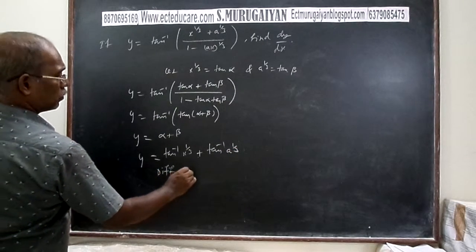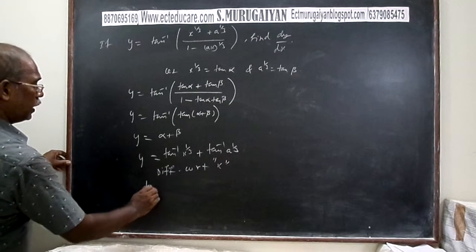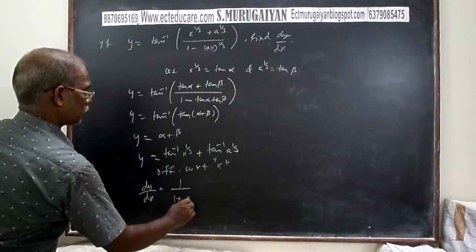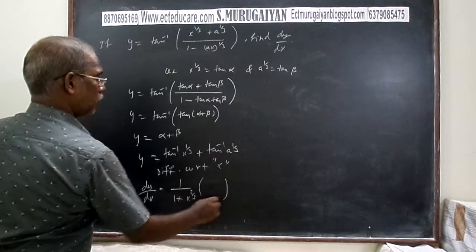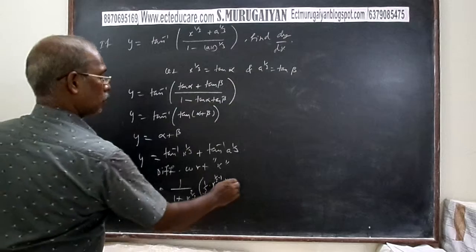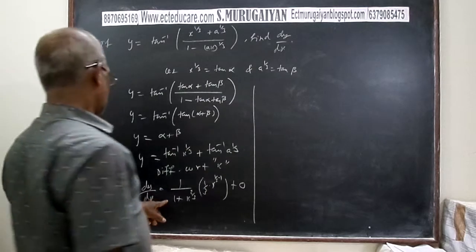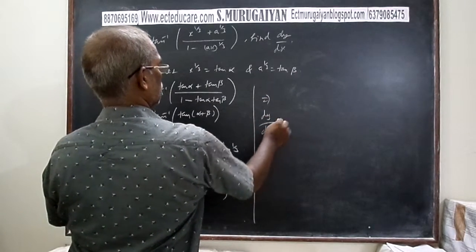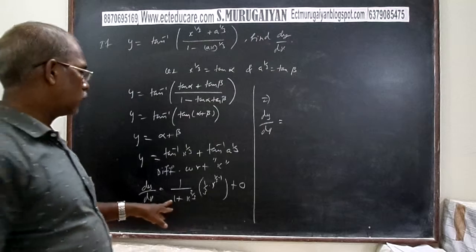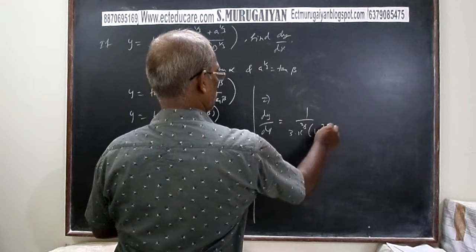Differentiating with respect to x: du/dx — by chain rule, the derivative of tan⁻¹(x^(1/3)) is 1/(1 + x^(2/3)) multiplied by the derivative of x^(1/3), which is (1/3)x^(-2/3). The second term tan⁻¹(a^(1/3)) is constant, so its derivative is 0.